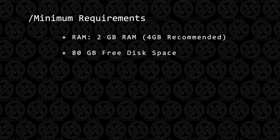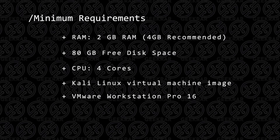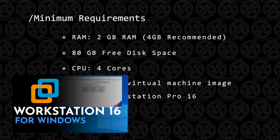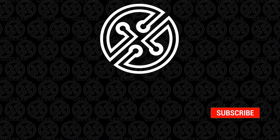For hard disk space, you're going to want at least 80GB, as well as 4 CPU cores, the Kali Linux Virtual Machine image file, and VMware Workstation Pro 16. If you don't have that installed, you can check out this video and I'll walk you through the steps. All the steps and tools used in this video will be linked in the description below. If you find this video useful, please consider subscribing to the channel.